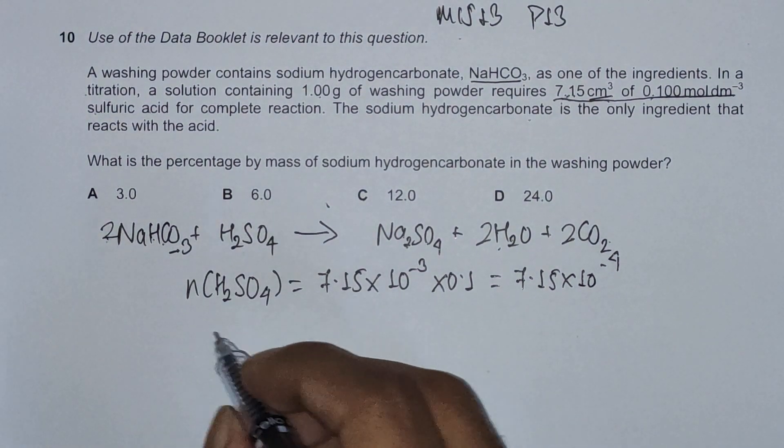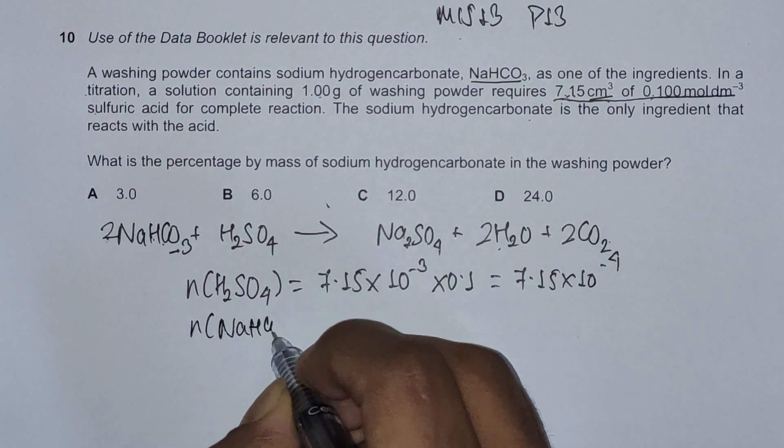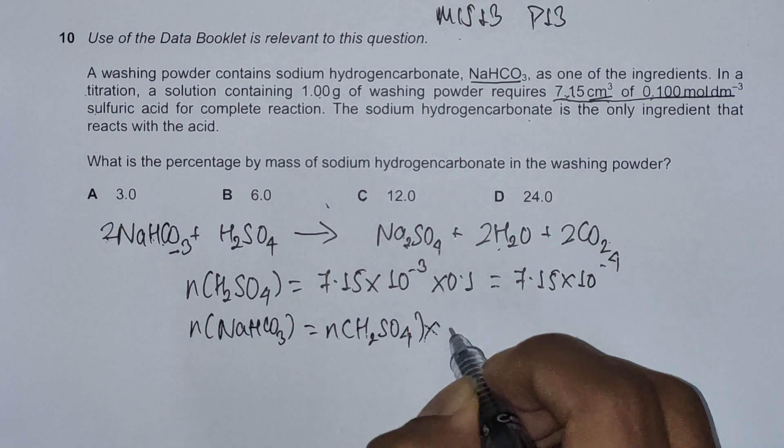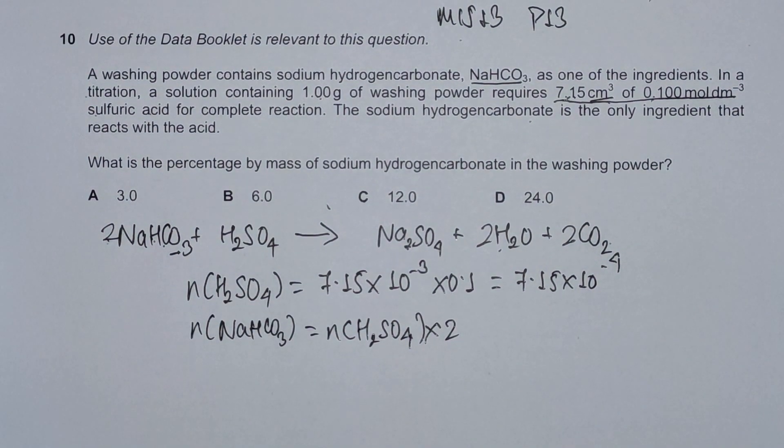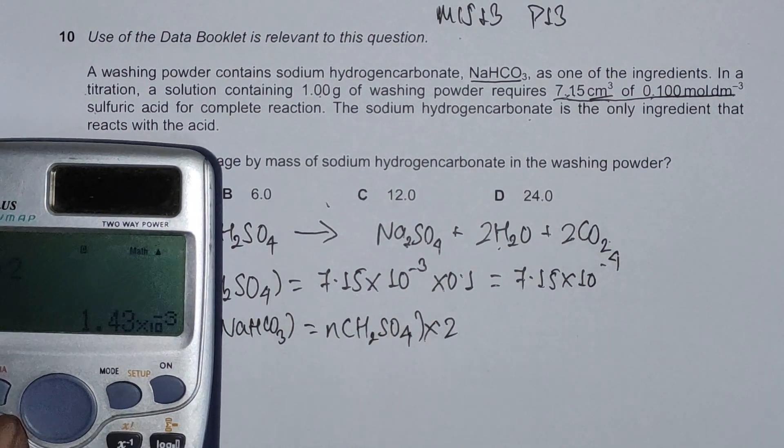Now we have moles of sodium hydrogen carbonate. Moles of NaHCO3 equals moles of sulfuric acid multiplied by 2, looking at the mole ratio or stoichiometric numbers, which is 1.43 × 10⁻³.